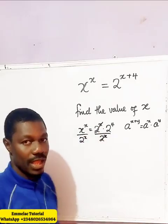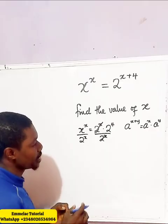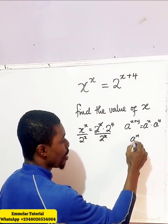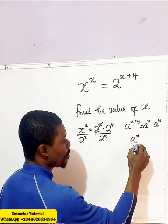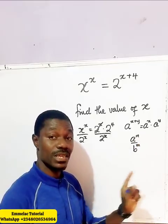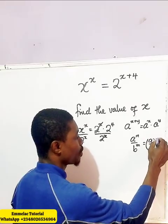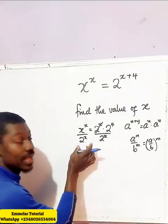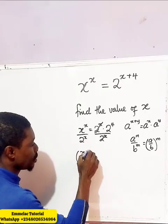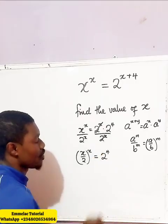Now, let's recall that if you have a raised to the power of m over b raised to the power of m — so long as they share the same exponent — this gives us a over b, all raised to the power of m. Applying this rule here, we end up with x over 2, all raised to the power of x, equals 2 raised to the power of 4.